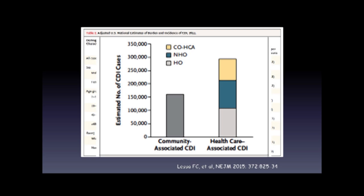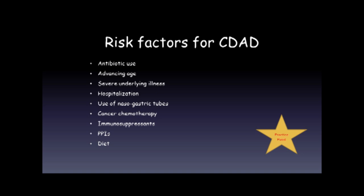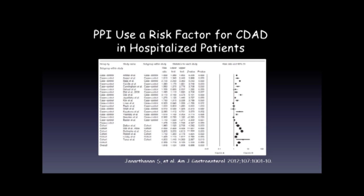The risk factors for C. difficile include antibiotic use, advancing age, severe underlying illness, hospitalization, nasogastric tube use, cancer chemotherapy, immunosuppressants, PPIs, and perhaps diet. A meta-analysis of the PPI story shows that overall, PPIs do increase the risk of C. difficile disease, though the risk is relatively small.